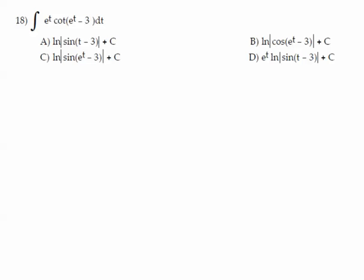And we have to remember with tangent and cotangent, unless they're squared, what we have to do is rewrite them in cosine over sine or sine over cosine form. So we have e to the t cosine of e to the t minus 3 over sine of e to the t minus 3 dt.